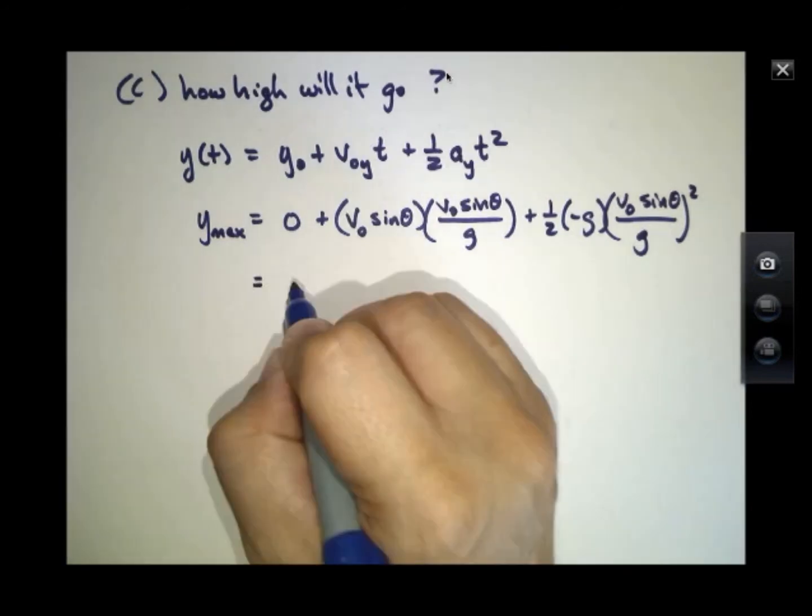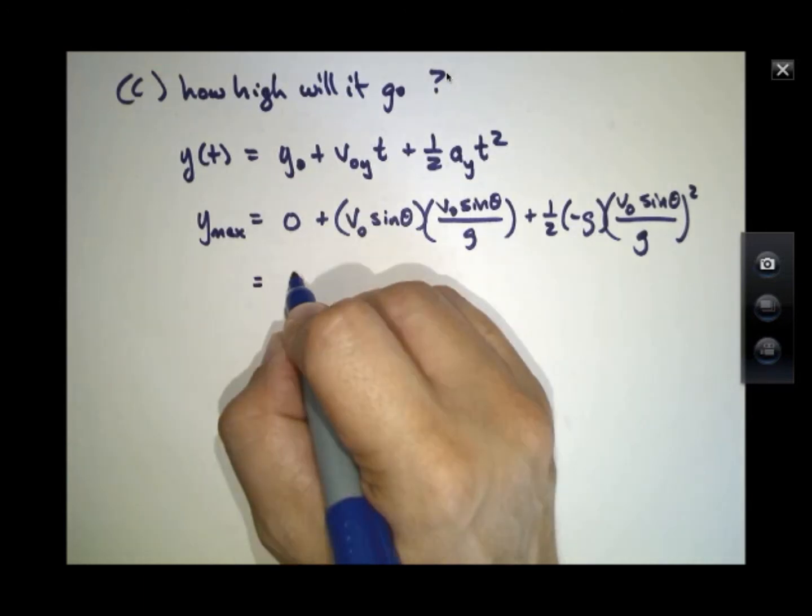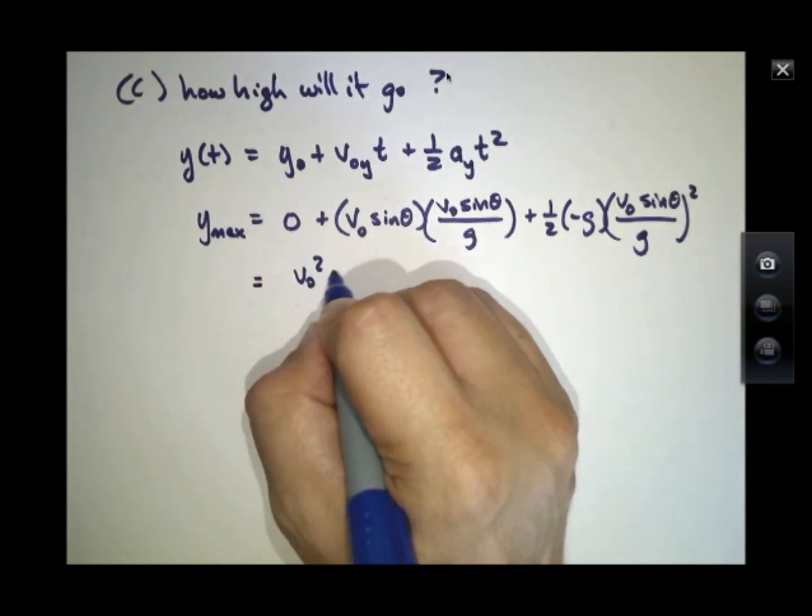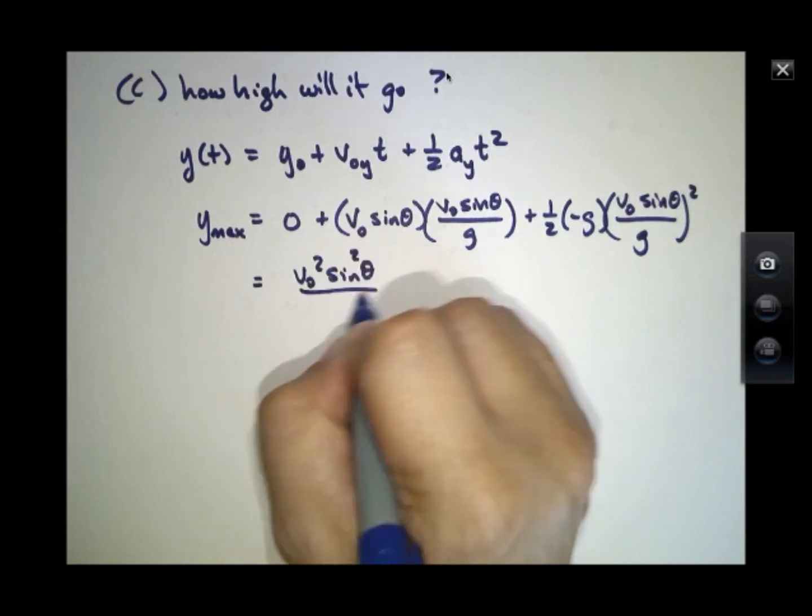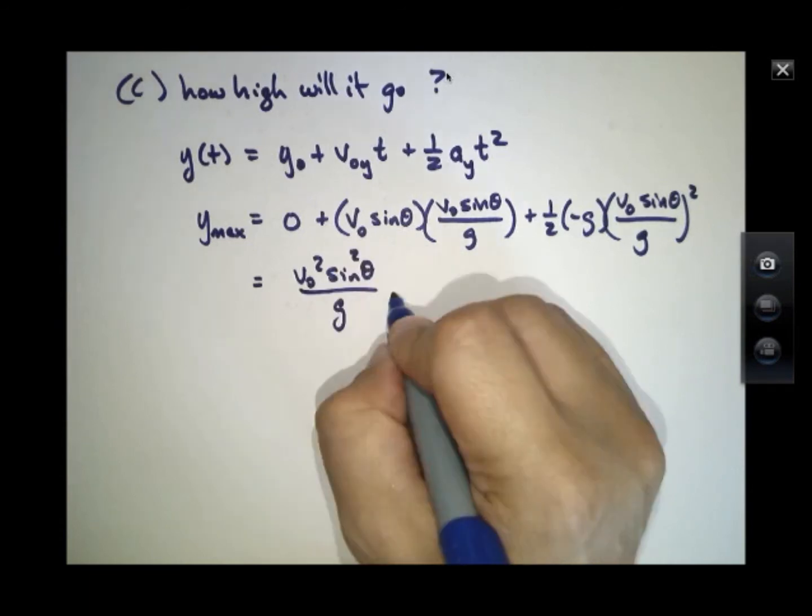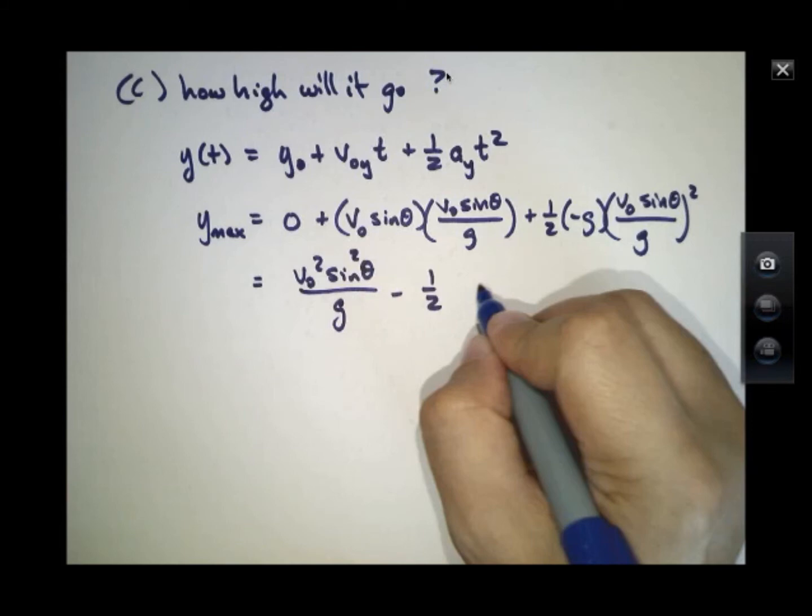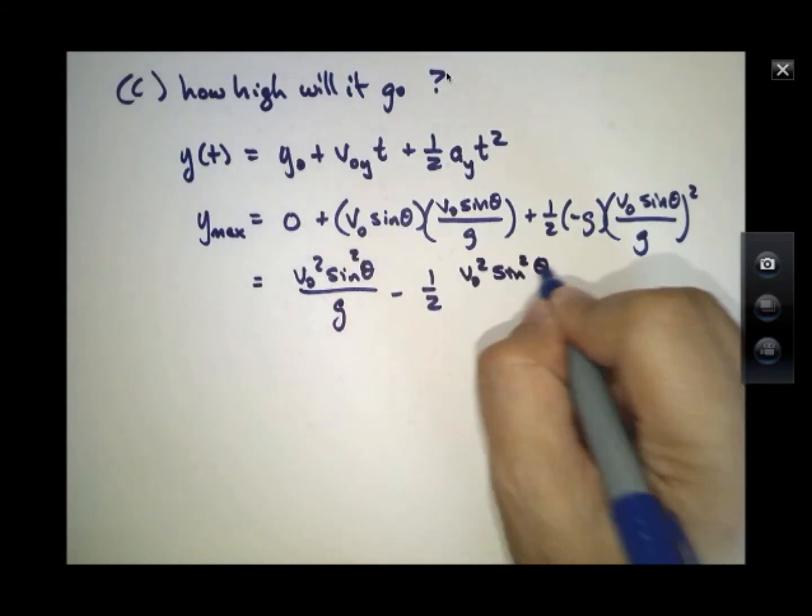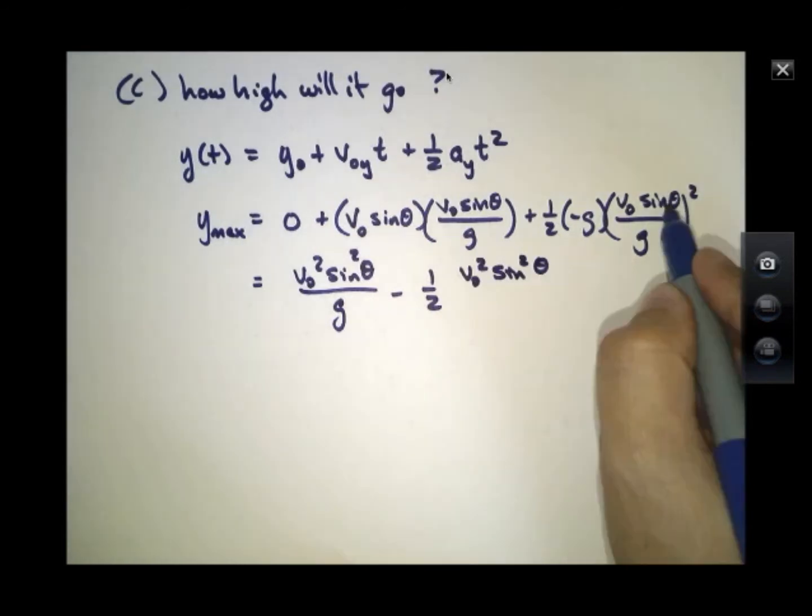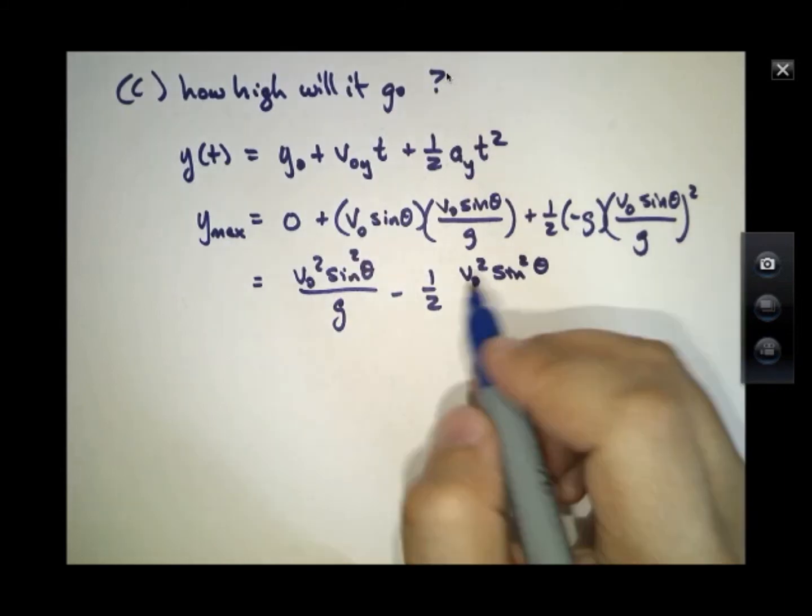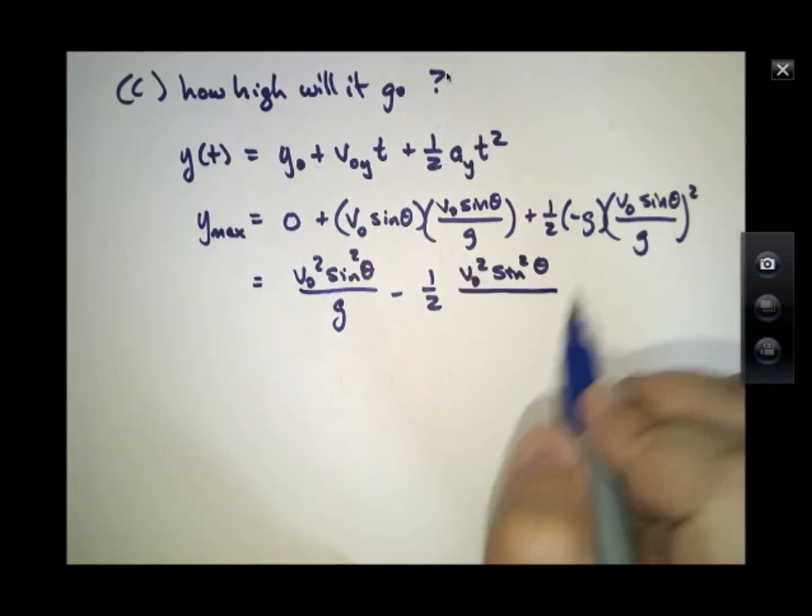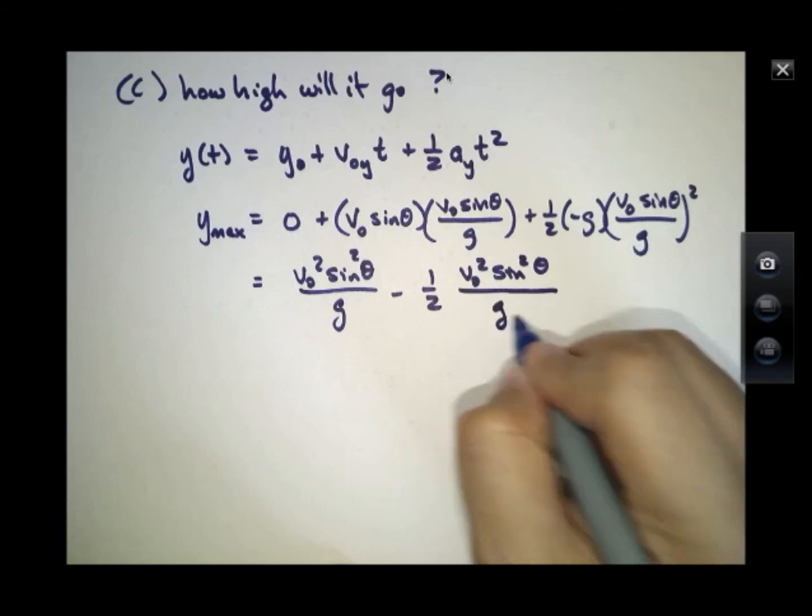So this equals v₀² sin² θ over g minus one-half v₀² sin² θ. That's from squaring these two things. Now it should be divided by g², but it's going to be canceled by one of those g's. One of those g's will be canceled by the g up front.